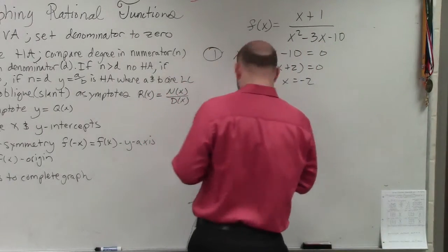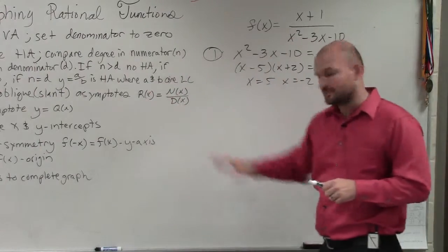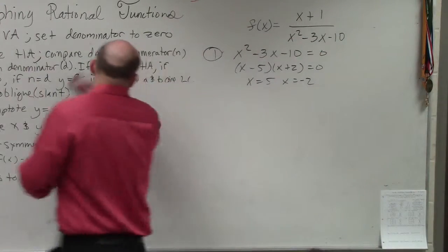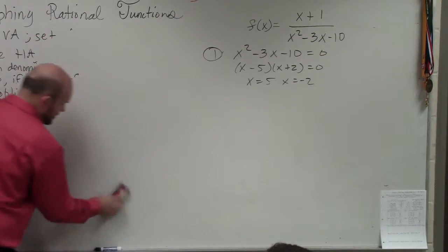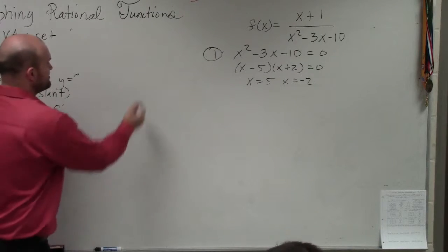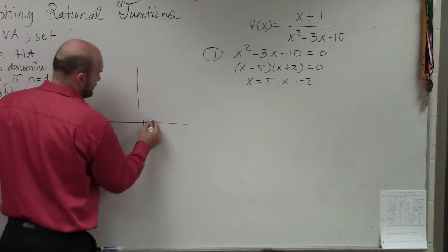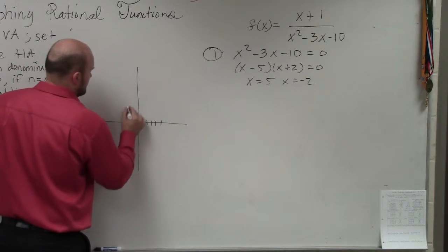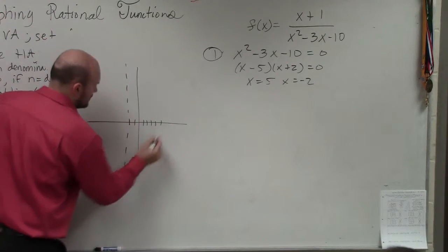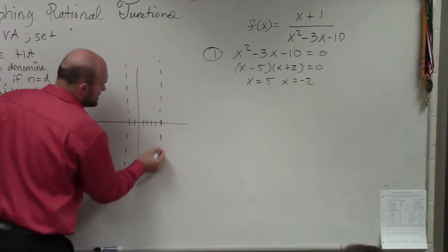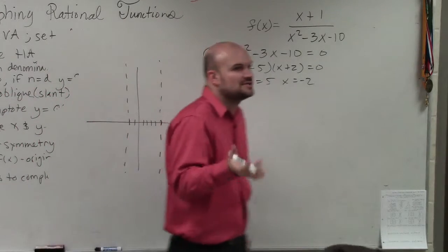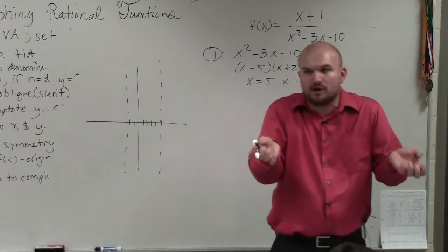So if I was going to graph this, does everybody have this written down? What I do for these asymptotes is I graph a vertical dashed line because the graph is not going to cross those vertical asymptotes because it's not a part of the line.